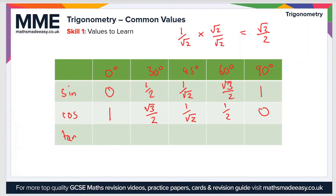Finally, the values of the tan function: tan of 0° is 0, so the tan function also passes through the origin. Tan of 30° is one over root three. Tan of 45° is 1. Tan of 60° is root three. Tan of 90° is a bit of a weird one — because there are asymptotes at 90° in the tan function, the value is undefined.